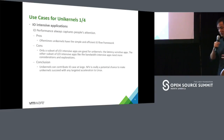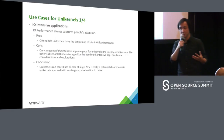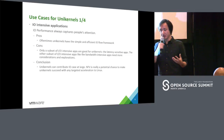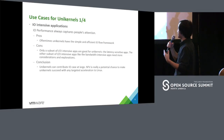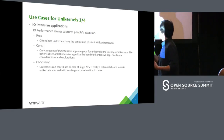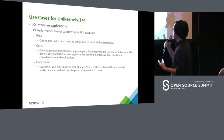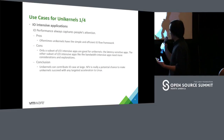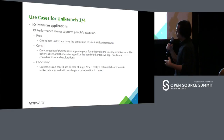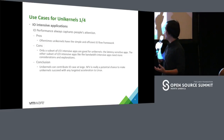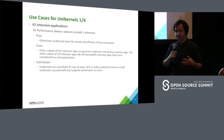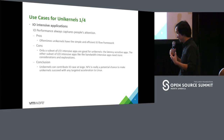Our next part is about exploration. Let's begin with some potential and valuable use cases. First is the I/O-intensive application. Unikernel aims to address I/O performance because it has a simple and efficient I/O flow framework. But just one subset of I/O-intensive applications — latency-sensitive applications — is the immediate focus. Bandwidth-intensive applications need more consideration and exploration. Anyway, unikernel can contribute at the I/O layer, and especially with NFV, unikernel with targeted acceleration can still benefit NFV solutions.